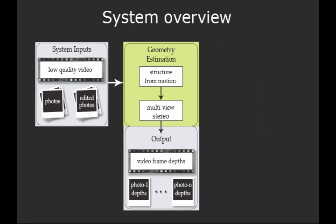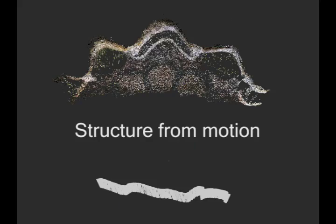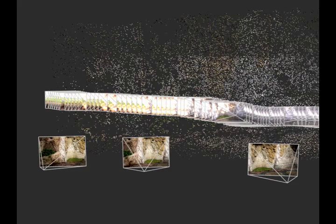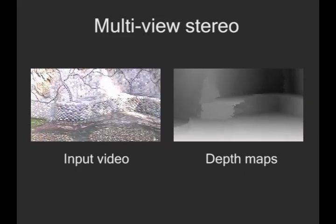To accomplish this, using the input video and photographs, we estimate the scene geometry using structure from motion and stereo. Our image-based video rendering algorithm constructs an enhanced video using the appearance of the photographs. This spatial appearance is created while still preserving the temporal dynamics of the video, such as highlights and dynamic lighting. The scene geometry is estimated using structure from motion to recover a sparse 3D point cloud of the scene and the relative poses of the video frames and still photographs.